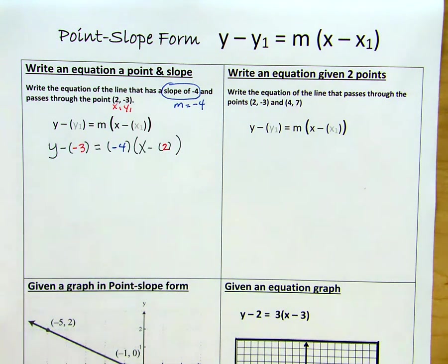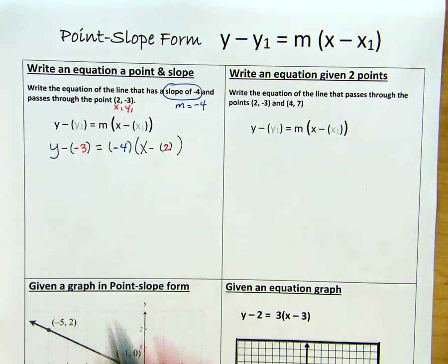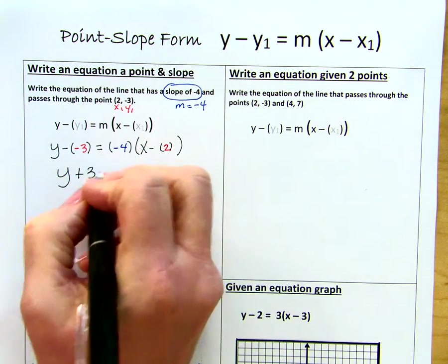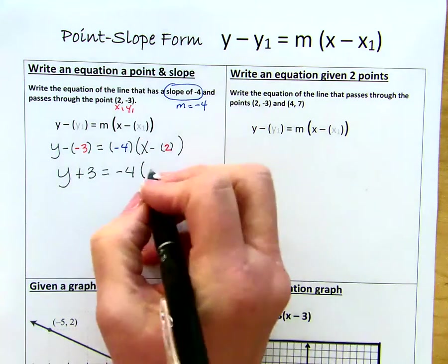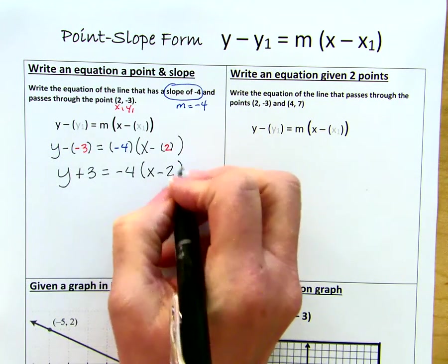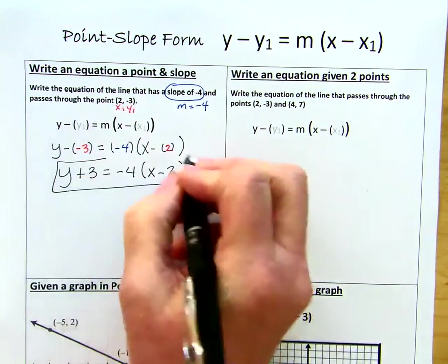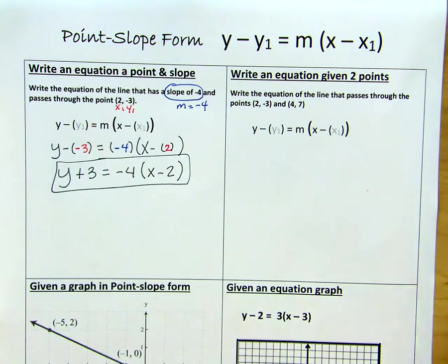Now all we have to do is simplify. Subtracting a negative is the same as adding a positive. Slope is not going to change, and your x minus 2 stays x minus 2. So here we have an equation in point slope form.